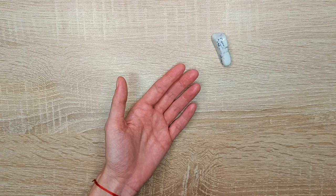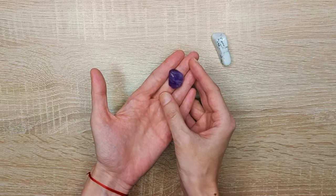So we will wrap a howlite, an amethyst crystal and a beautiful carnelian.